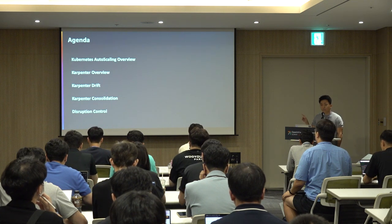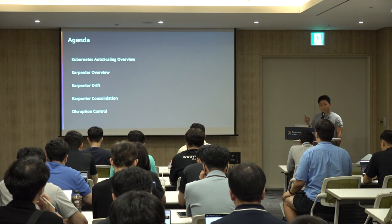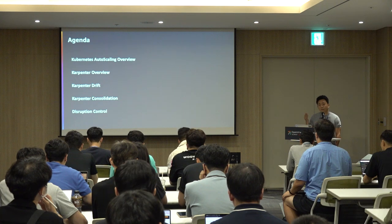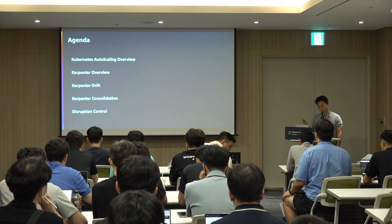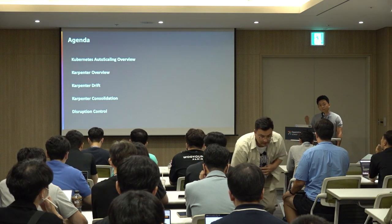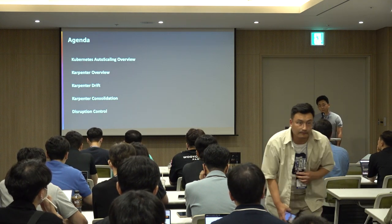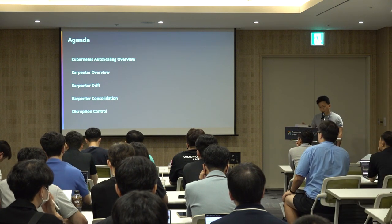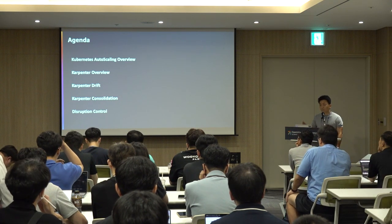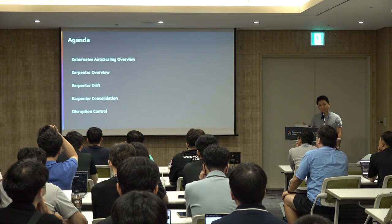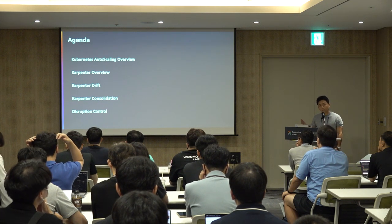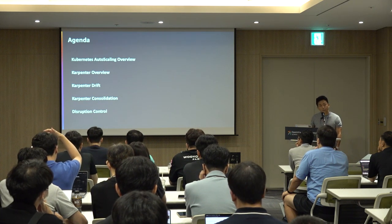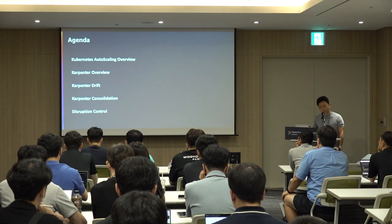Here's a quick agenda for the session. I will first introduce some of Kubernetes' autoscaling features and provide an overview of Karpenter — what challenges it solves, why it was developed, and some of the key features such as drift, consolidation, and disruption control that help you with node operations.